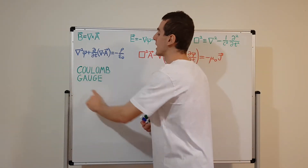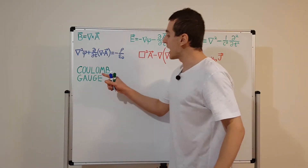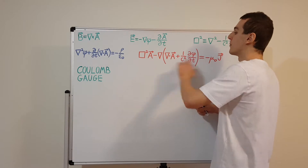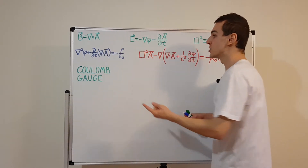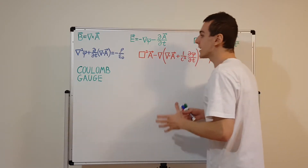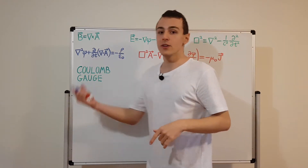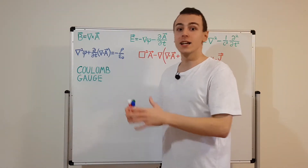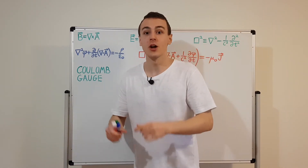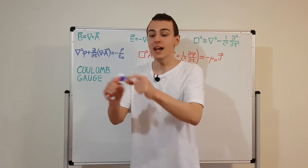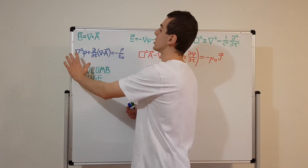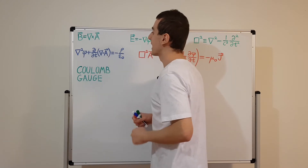Now let's look at the Coulomb gauge. What we're going to aim to do is simplify this blue equation and this red equation, because these are coupled — A and phi appear in both equations. In the previous video on the Lorentz gauge, we isolated A and phi separately into inhomogeneous wave equations. To get rid of the A dependence in the blue equation, we can set this term equal to zero — and that is the Coulomb gauge: we specify the divergence of A.